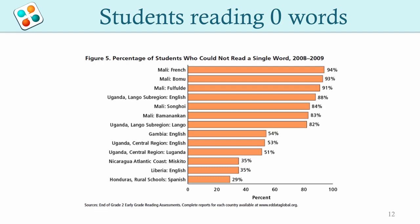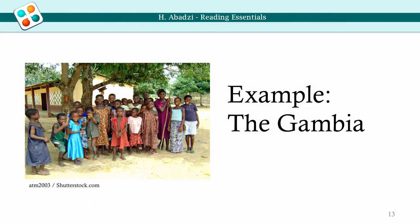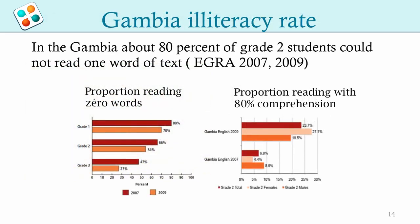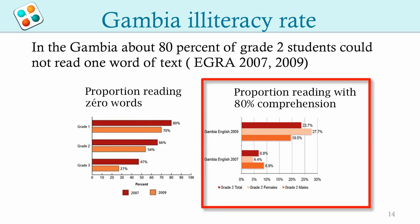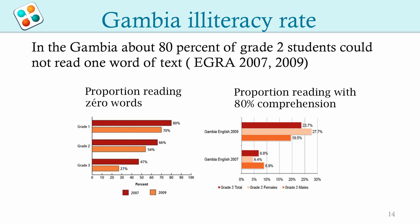Many even lack knowledge of letters. Take, for example, the Gambia. The early grade reading assessment was given in English in the Gambia in 2007 and 2009. 70 to 80% of second graders could not read one single word. Predictably, reading comprehension scores are very low. Only about 24% of students in grade 2 could read and understand a simple paragraph.